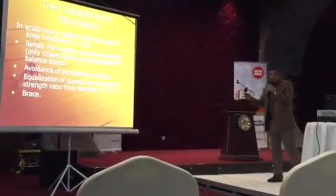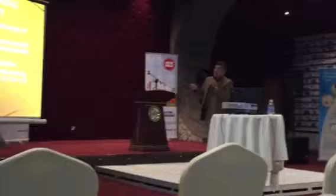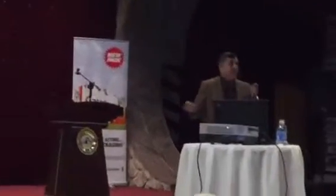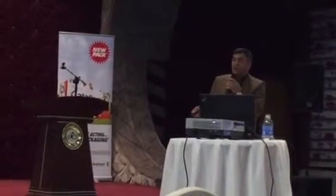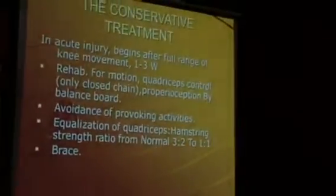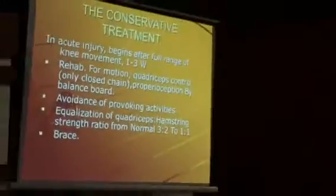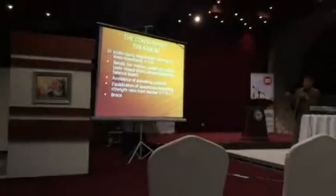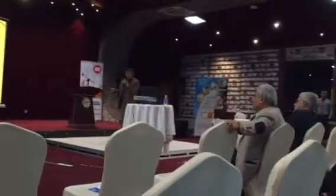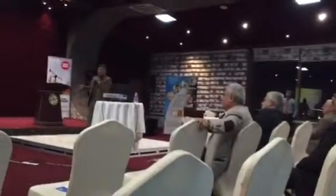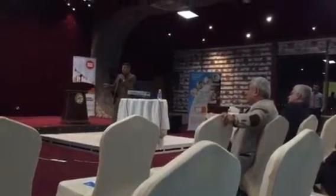Conservative treatment for acute ACL injury begins after full range of movement is achieved, typically within two to three weeks. Rehabilitation focuses on quadriceps control, using only closed-chain exercises in the first weeks. Proprioceptive strengthening via balance board stimulation is included, along with avoidance of provoking activities and equalization of the quadriceps-to-hamstring strength ratio toward normal.